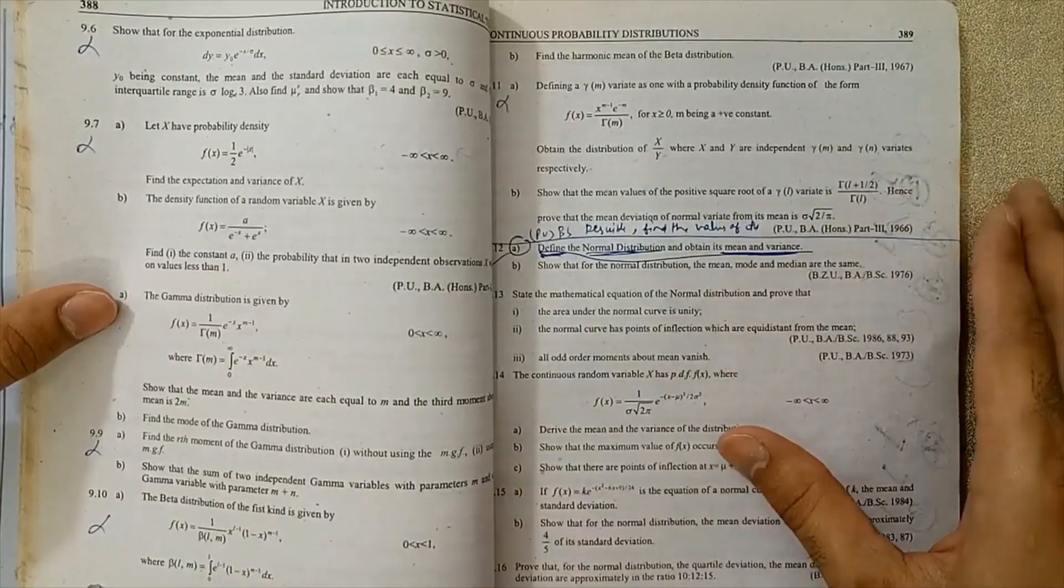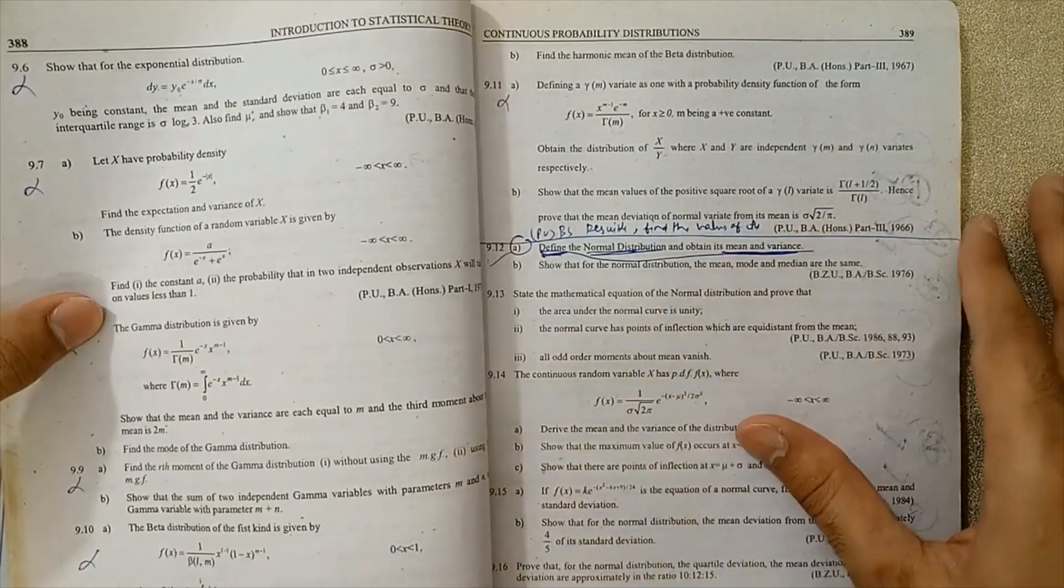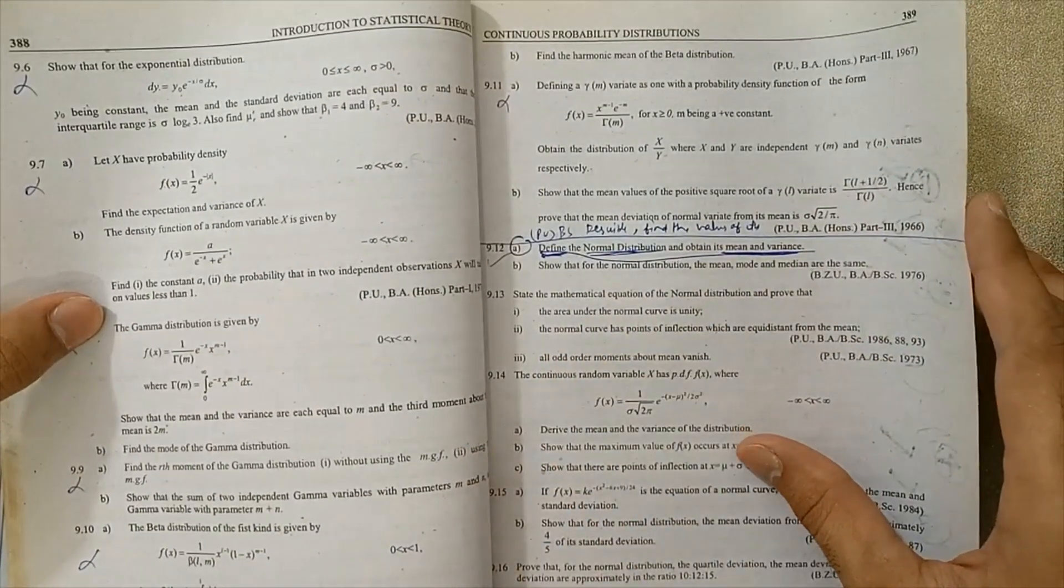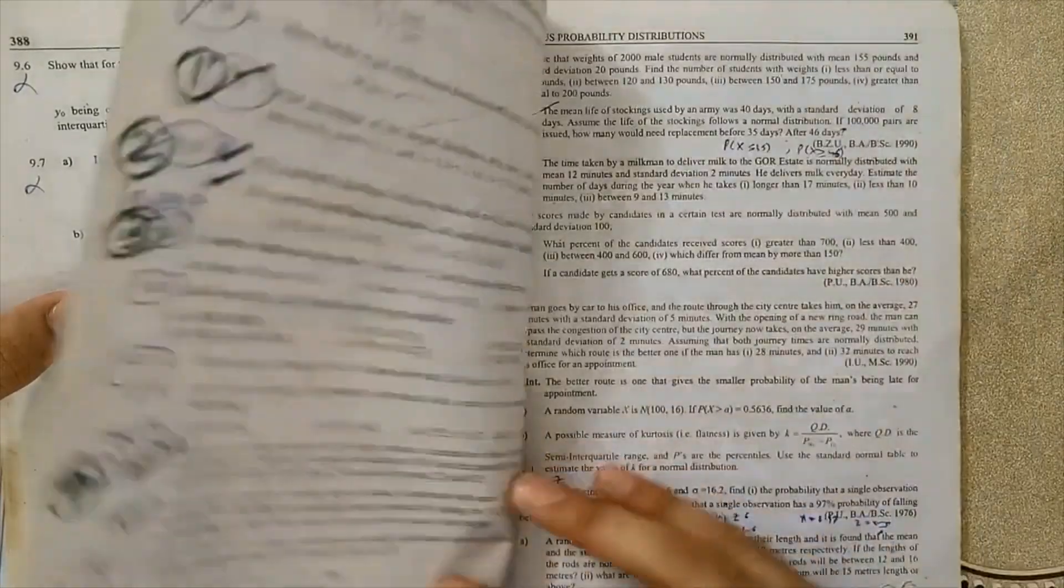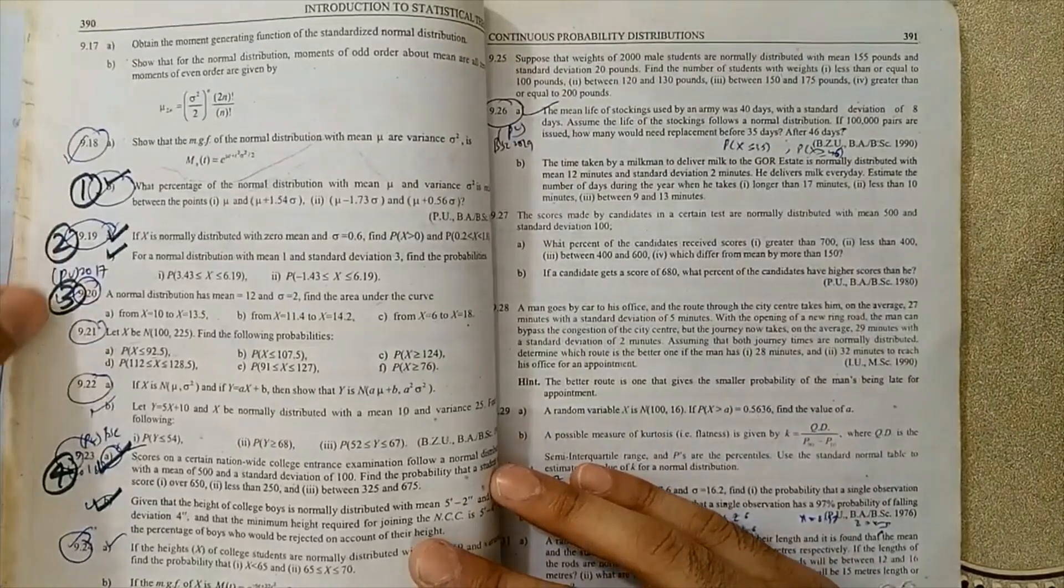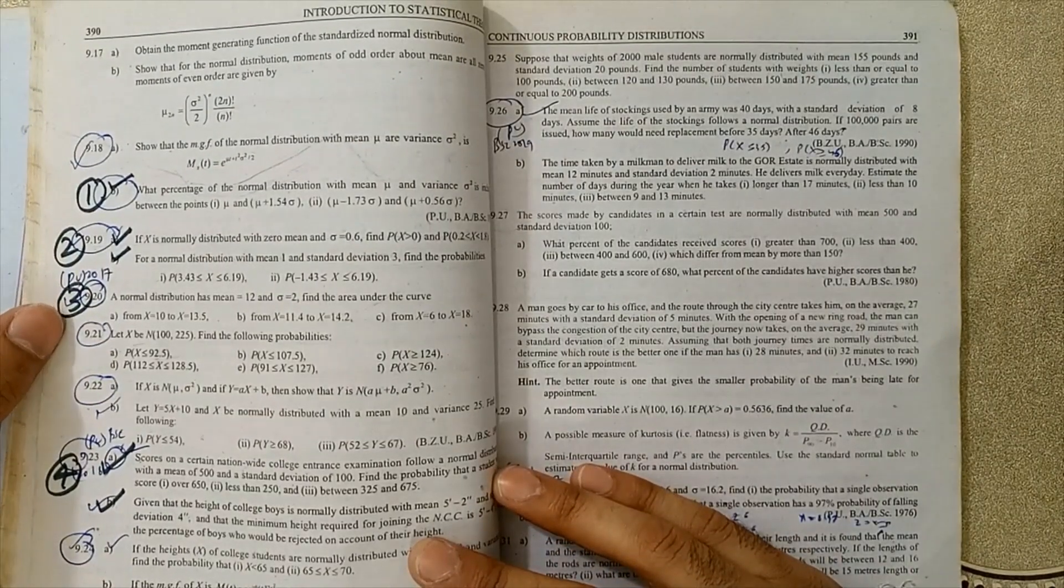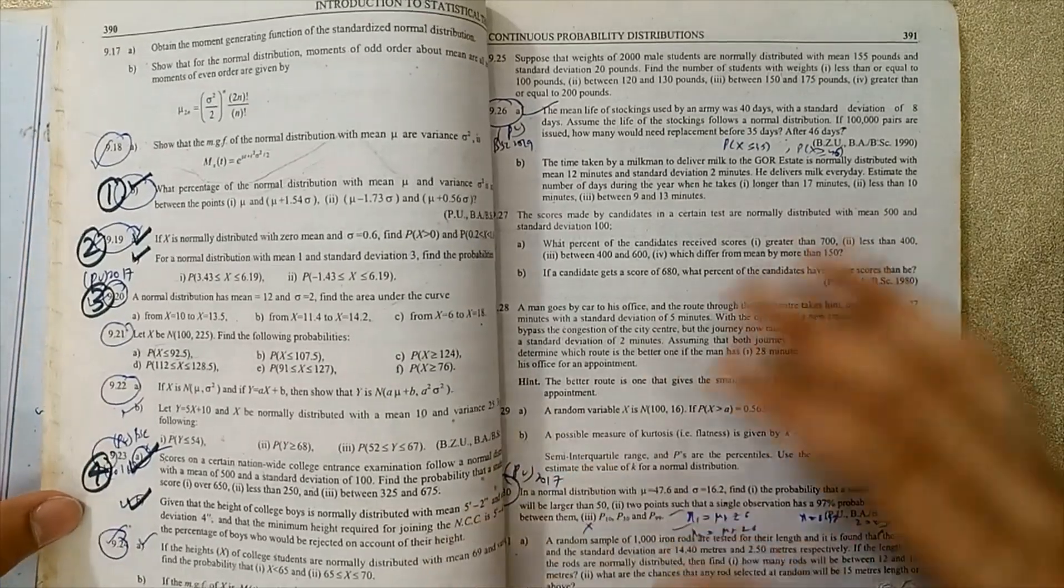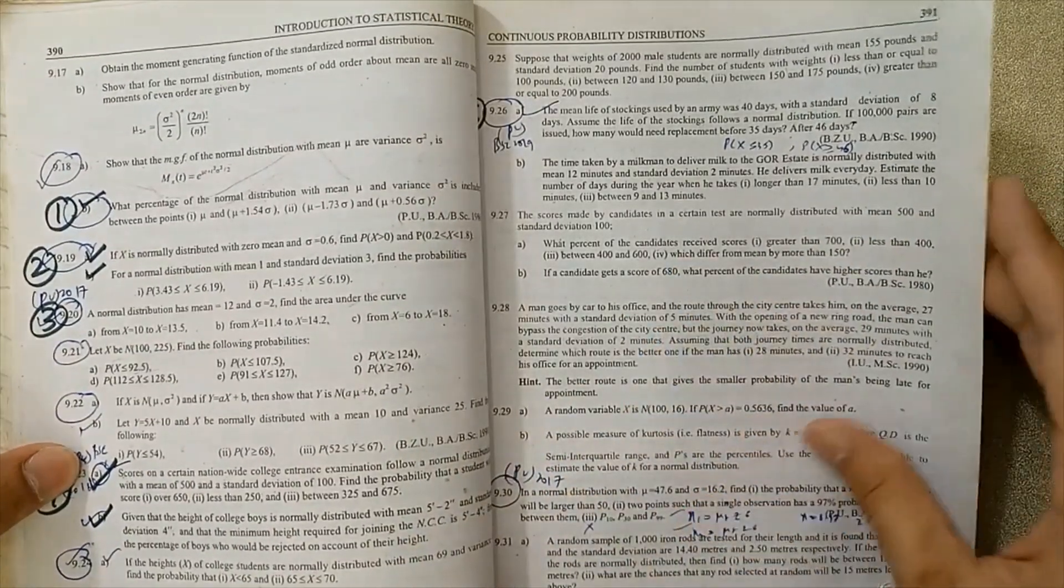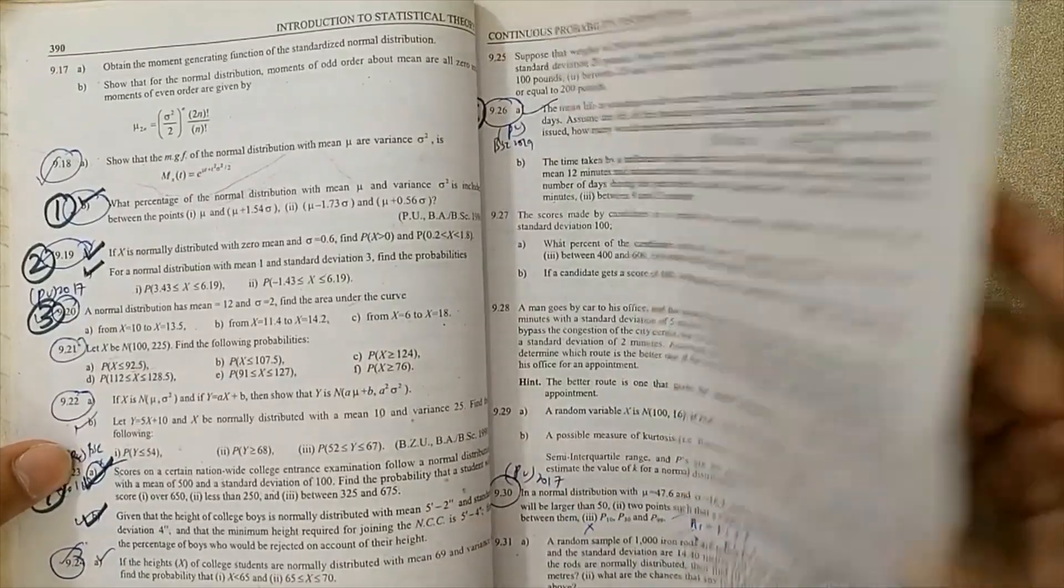Next, problem 9.12 - topic normal distribution, mean and variance - is very important for exams. Problems 9.18, 9.19, 9.20, 9.21, 9.22, 9.23, 9.24, 9.26, and 9.30 are very important for exams.